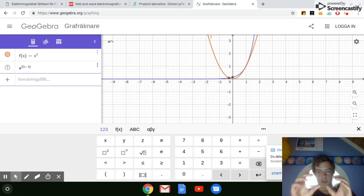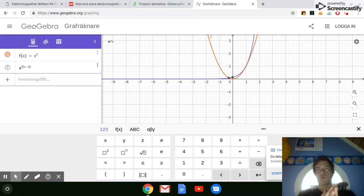If you zoom in around a point, it's basically, it's not what that function looks like if you turn it linear, it's what it looks like if you turn it into an exponential function, and what that base will be. That's the product derivative.